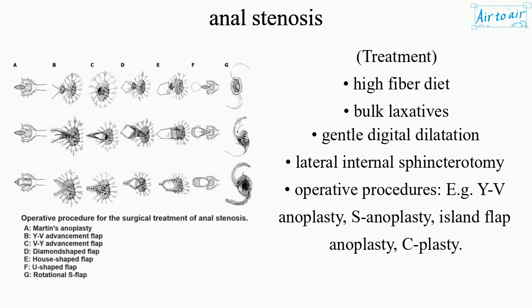Treatment options include a high-fiber diet, bulk laxatives, gentle digital dilatation, and lateral internal sphincterotomy. Operative procedures include Y-V anoplasty, S-anoplasty, island flap anoplasty, and C-plasty.